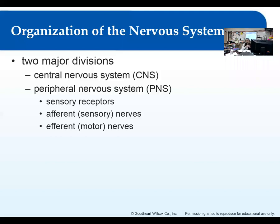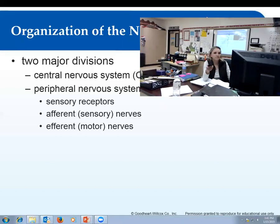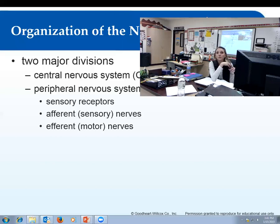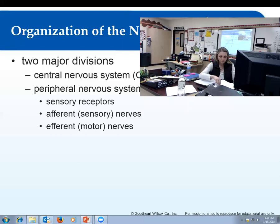Sensory nerves — afferent nerves — travel from the stimulus, like your fingers, back to the brain or spinal cord. Efferent nerves then are the nerves that travel back down to your muscles, creating that motor unit. Your motor nerves travel back from your brain or spinal cord down your arm or leg toward the stimulus, causing movement. I always think: efferent = effort = motor = movement. Afferent moves toward the CNS; efferent moves away from the CNS.